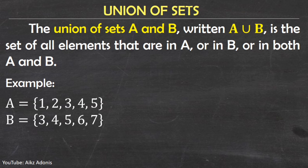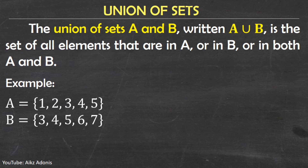Next is the union of sets. The union of sets A and B, written as A union B — please take note of the symbol for union, which looks like a capital letter U — is the set of all elements that are in A, or in B, or in both A and B. We will combine the elements of set A and B to get the union of these two sets.